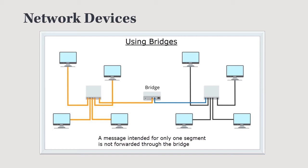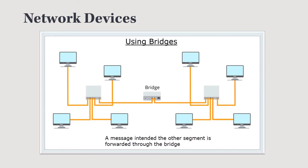That signal also travels over to the bridge. The bridge operates at layer two, so it looks at the MAC address and determines whether that MAC address exists on the other side of the bridge. If not, it stops the message and does not forward it. If the message is intended for the second segment, the bridge goes ahead and forwards that message from the first segment to the second.